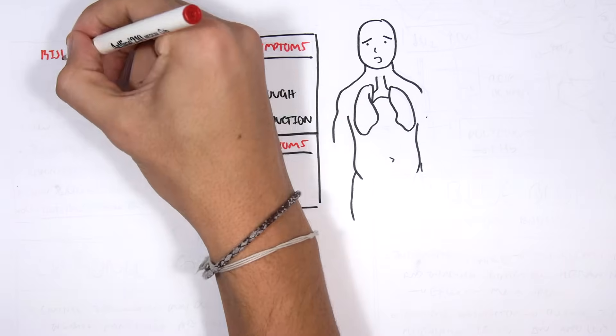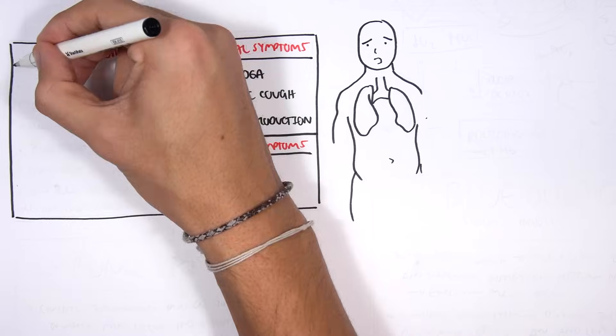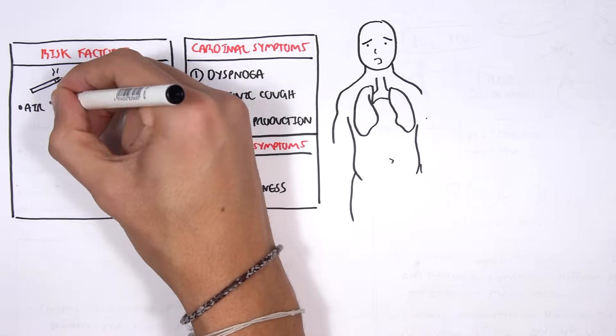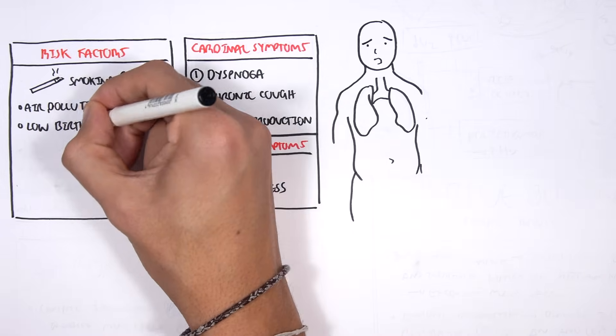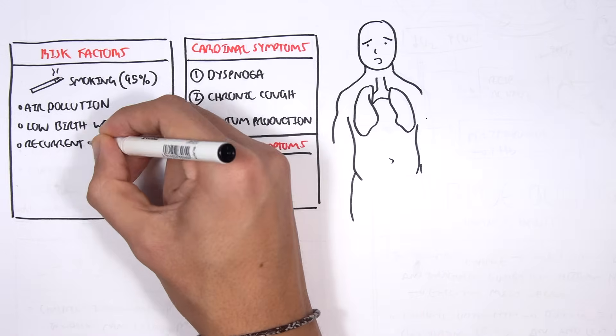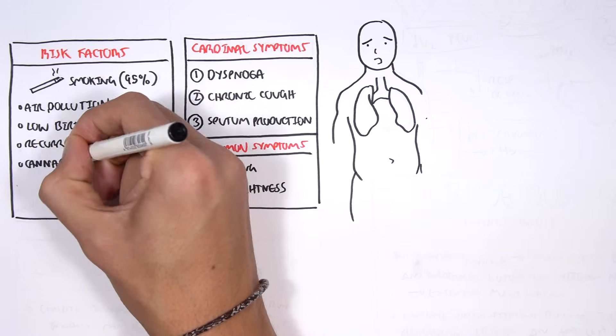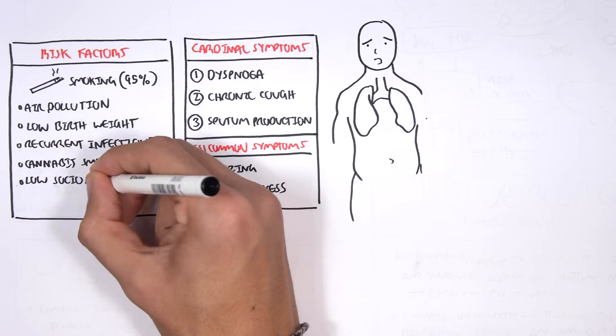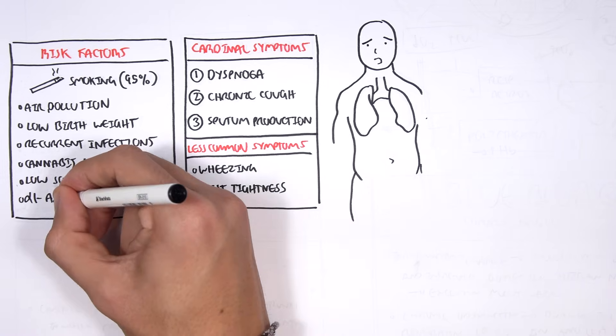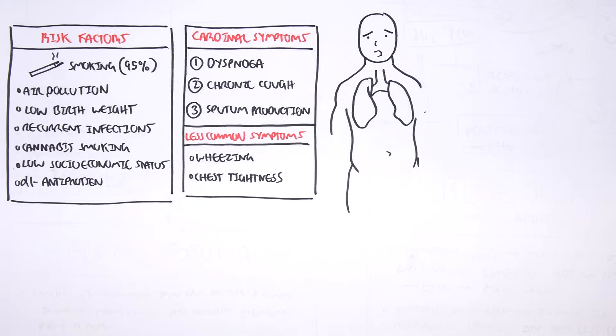Risk factors for COPD include smoking in 95% of cases, so it's a big risk factor. There's also air pollution, low birth weight, recurrent lung infections, and cannabis smoking. Low socioeconomic status and alpha-1 antitrypsin deficiency are also risk factors for COPD.